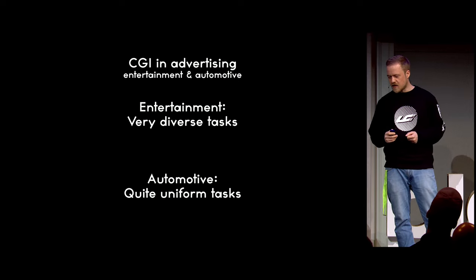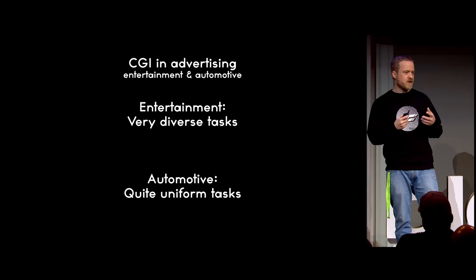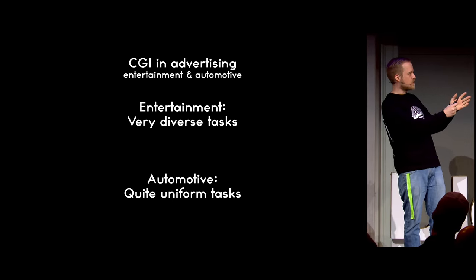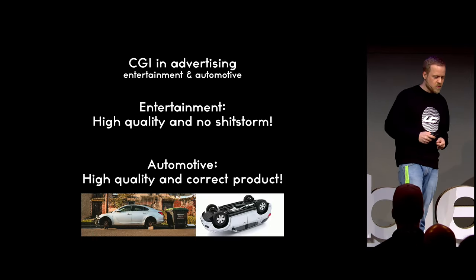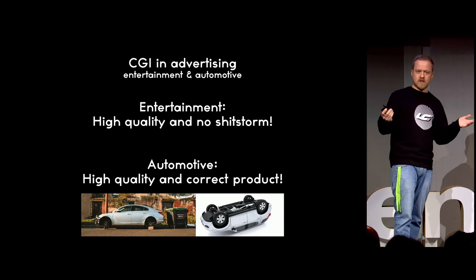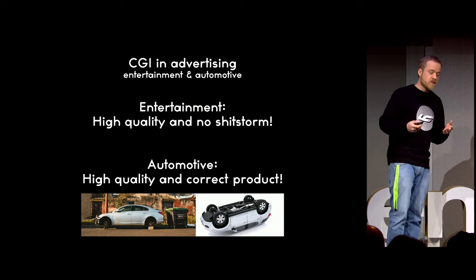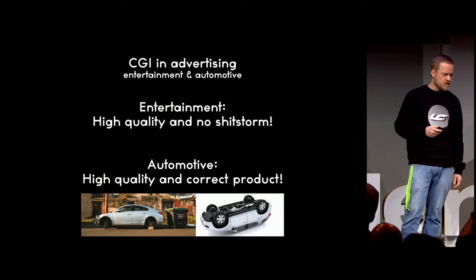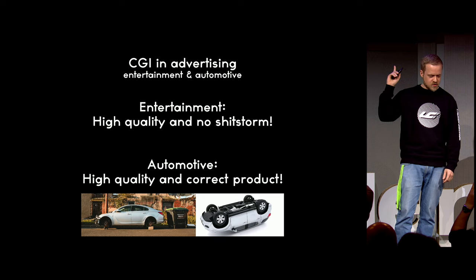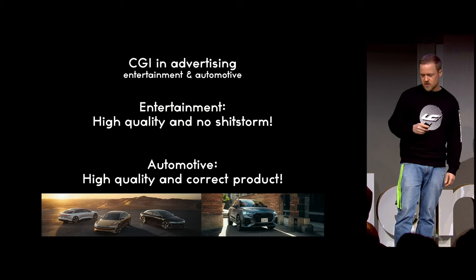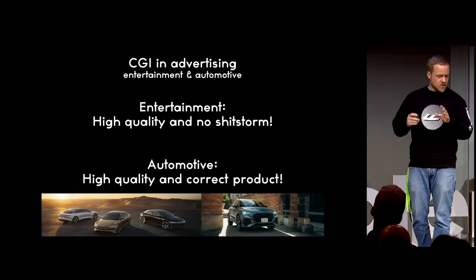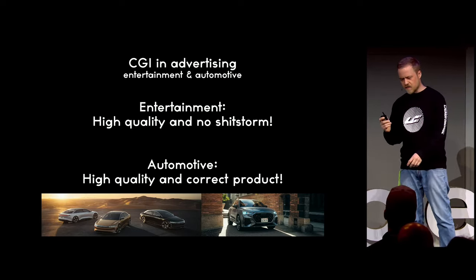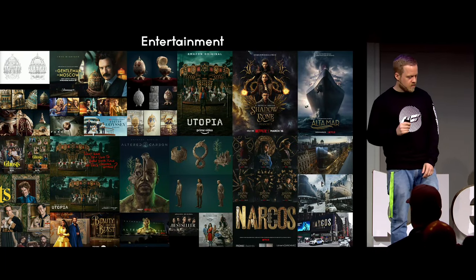What I'm talking about is CGI in advertising and automotive. In advertising you have very diverse tasks — I can make up 20 different things. Automotive is always a car, more or less: inside, outside, technology-wise. In entertainment you want high quality because you want it everywhere, but you don't want to cause a shitstorm — people get worked up about tiny little details. In automotive, you want to show the correct product: it should look nice and be a pleasing image. The product in its best light — the car paint correct color, the wheels in the correct position. There are many little things you need to take care about in detail.